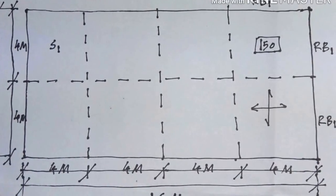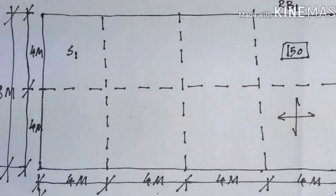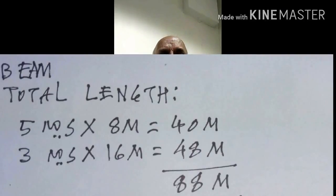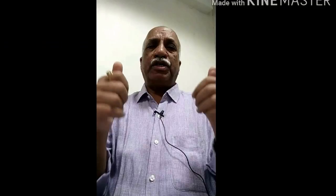From the plan, there are five beams 8 meters long, giving 40 meters, and three beams 16 meters long, giving 48 meters. The total length of beams with 300 by 450 cross-section is 88 running meters. As established in the previous video, for a 300 by 450 beam with M20 concrete...